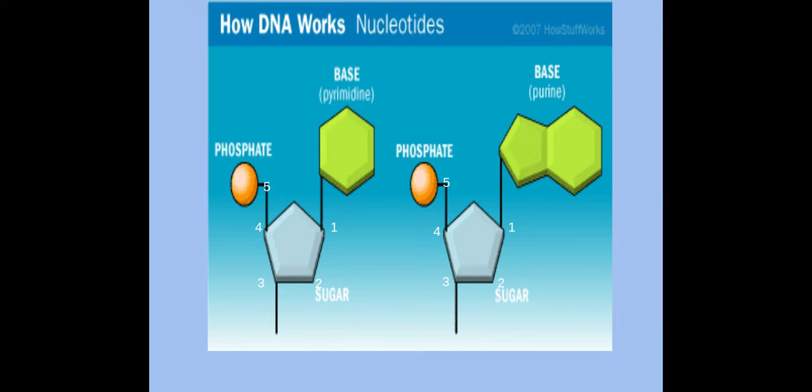This is the general overall structure of a nucleotide which is comprised of a phosphate group, a pentose sugar, so a five carbon sugar here, and then we've got a nitrogenous base, so a base made from nitrogen.